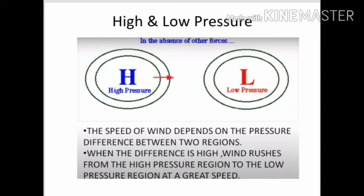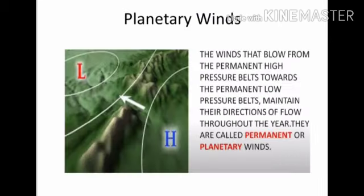For example, westerlies are winds that blow from the west. The direction of blowing, the duration, the regions covered, and the condition of the air determine the following wind types: first, planetary winds; second, local winds; third, seasonal winds.